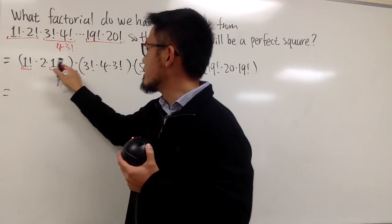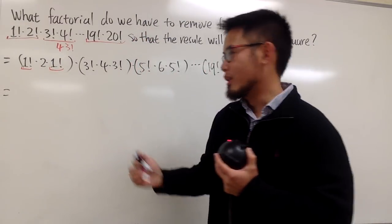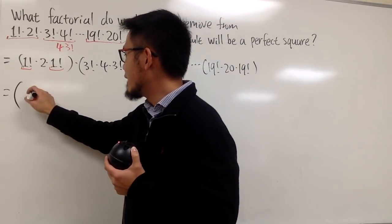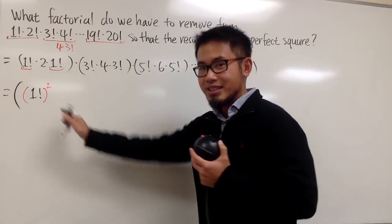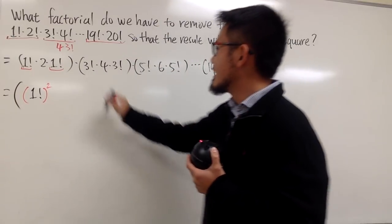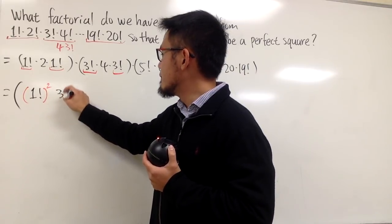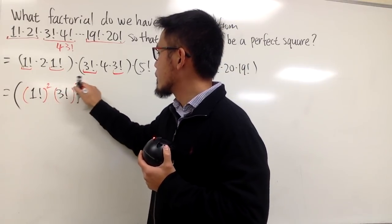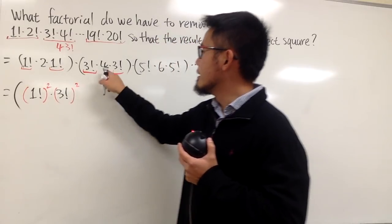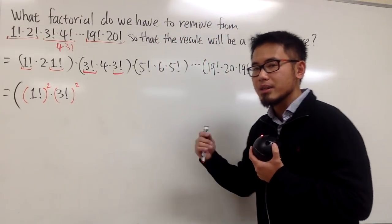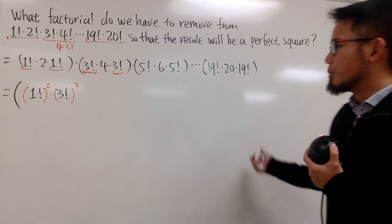So for example, from the first parentheses, I will purposely write this as (1!)² to make us feel better. So we have (1!)². So it is a perfect square. Next, let's pair this up together. We have (3!)². And notice, I didn't put down the 2, I didn't put down the 4, but it's okay, because multiplication is commutative.